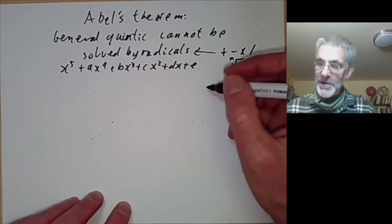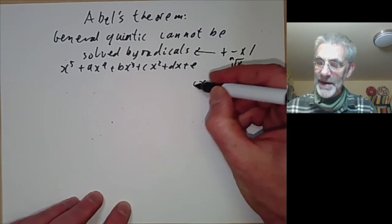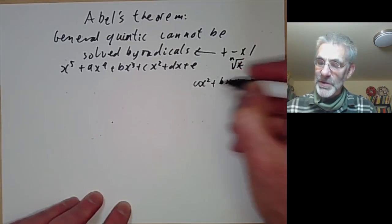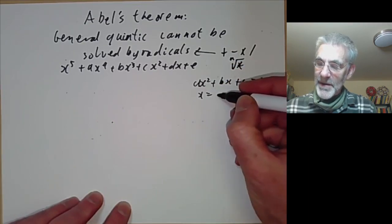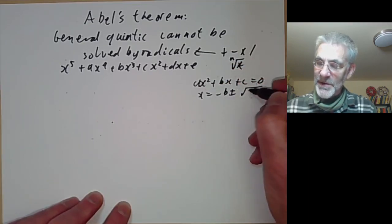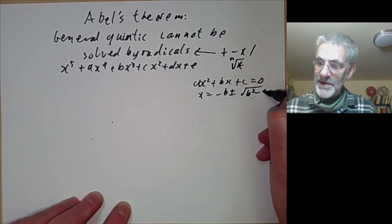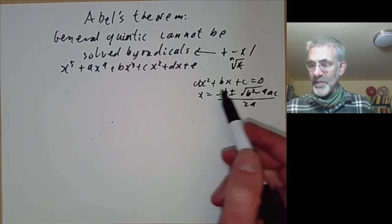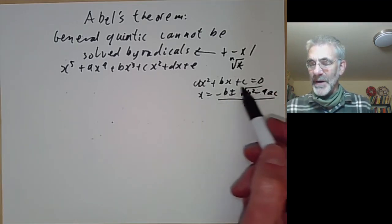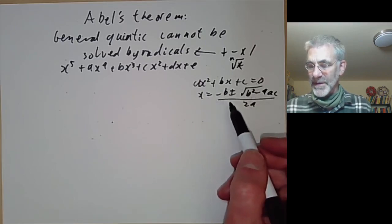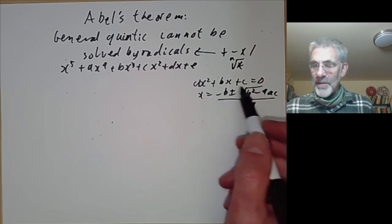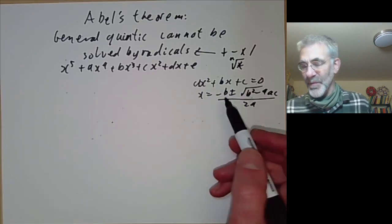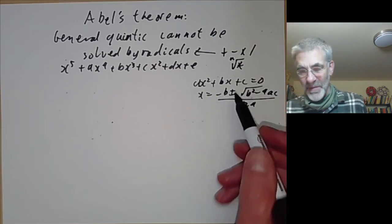Of course everybody knows how to do degree 2: if you've got ax squared plus bx plus c equals 0, then x is minus b plus or minus the square root of b squared minus 4ac over 2a. The formulas for cubics and quartics are really rather messy to write out explicitly, but you can do them.